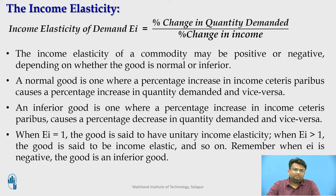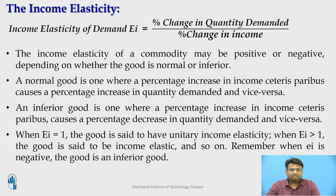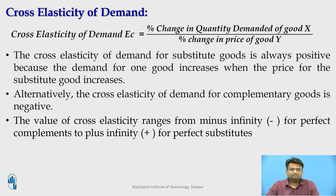So, when EI equals 1, the good is said to have unitary income elasticity. When EI is greater than 1, the good is said to have high income elasticity. When EI is negative, the good is said to be an inferior good.